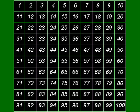This time we're going to use a technique called the sieve of Eratosthenes to find out all the prime numbers in between 1 and 100. So let's start the process.